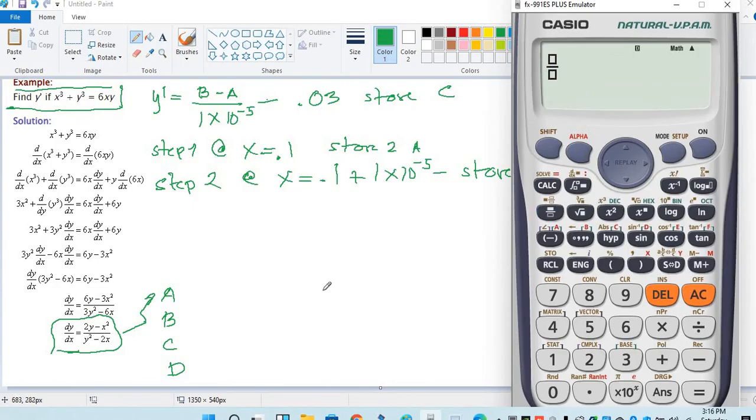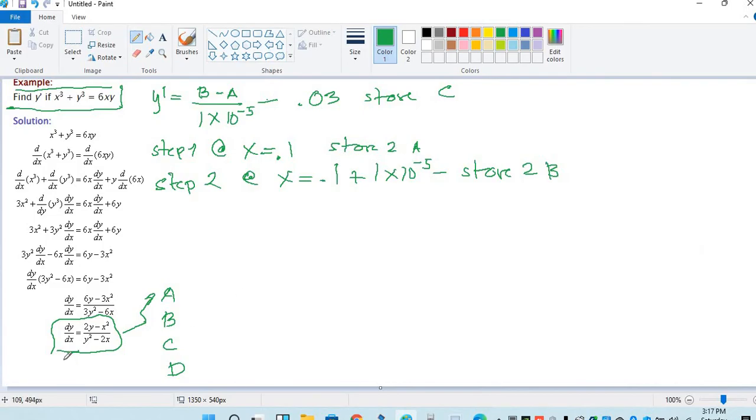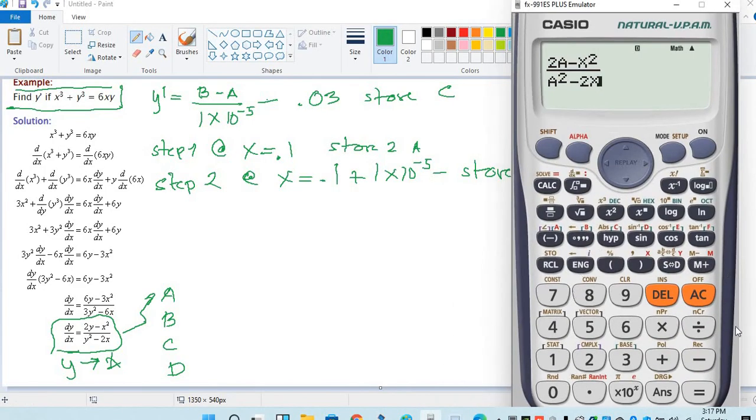Y become a minus x squared over y squared minus 2x. Let's double check. Y become a for the option, so let's verify. Equal 0.033.